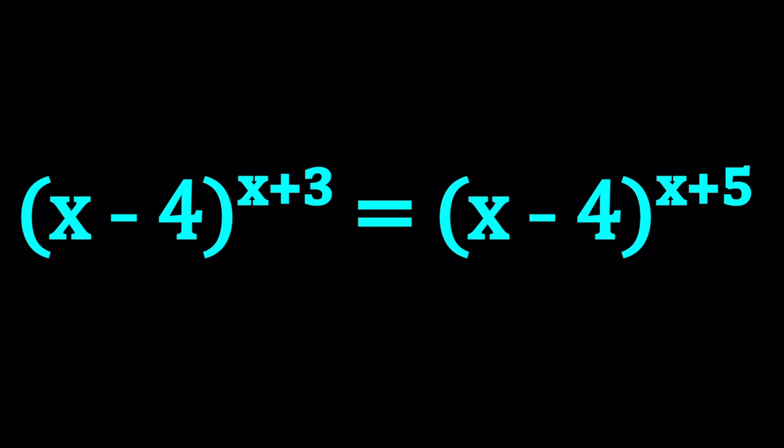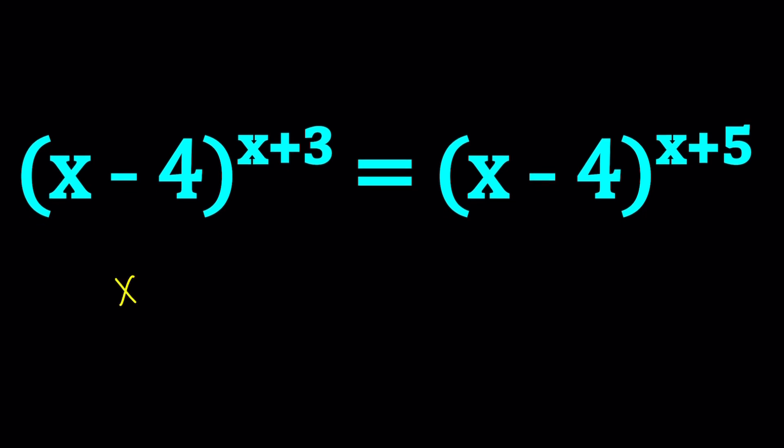Well, that would lead to a problem. Because if you think about it, if x plus 3 is equal to x plus 5, then x cancels out and we end up with 3 equals 5, which doesn't make sense at all, right? So we can't really directly do that. So what should we do instead? Maybe we should approach this problem a little differently.